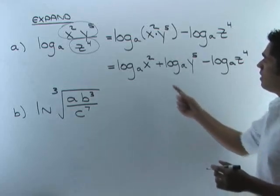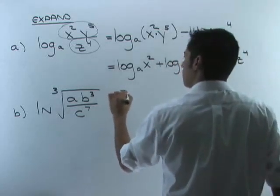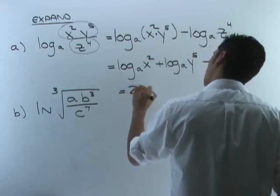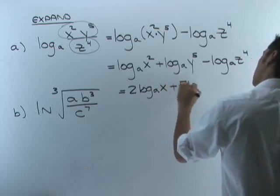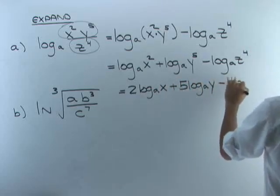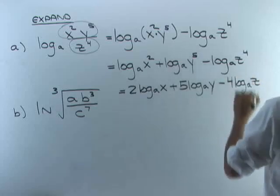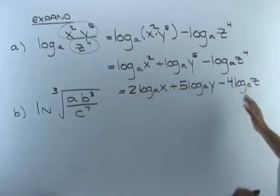Now what we do is take all the powers and pull them out. So we're using that last property. The two comes out: two log base a of just x plus five log base a of y minus four log base a of z. And that's it. We've expanded a single log out into actually three different logs here.